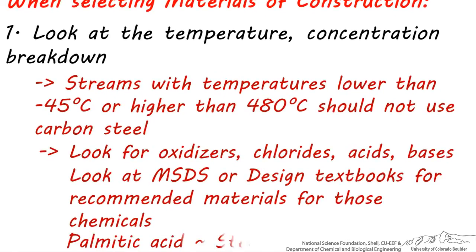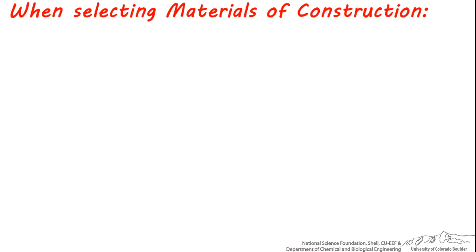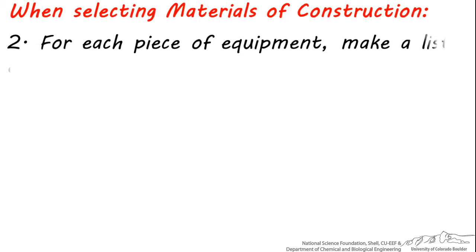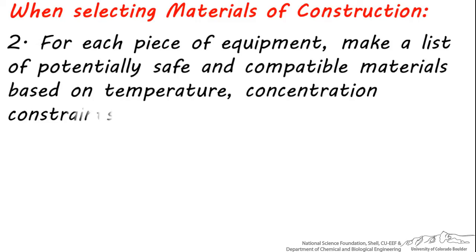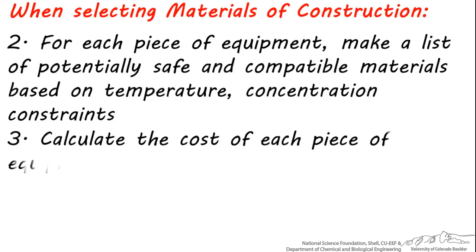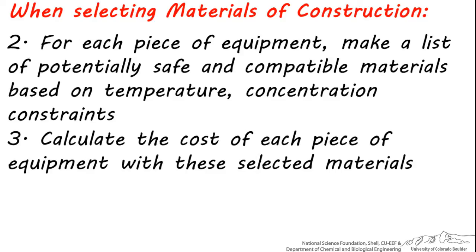For example, if you have palmitic acid as a component in your stream and you can't find it listed in a compatibility chart, find an analogous chemical such as stearic acid. Using this information, you can make a list of potentially safe and compatible materials considering the components in the stream, and then calculate or estimate the cost of that piece of equipment made with those materials to narrow it down to a final selection.